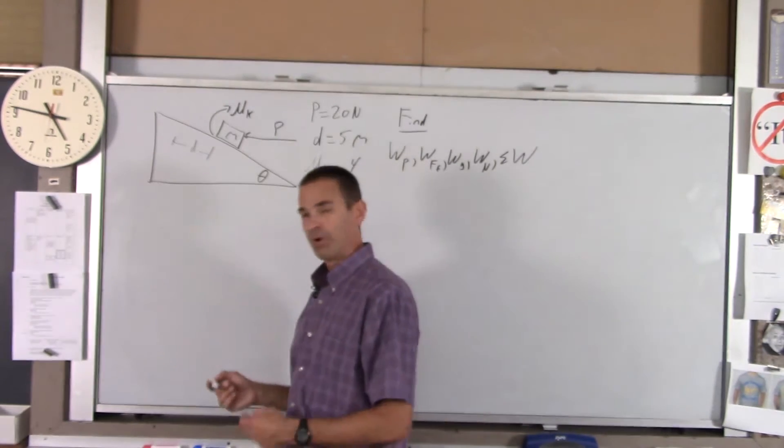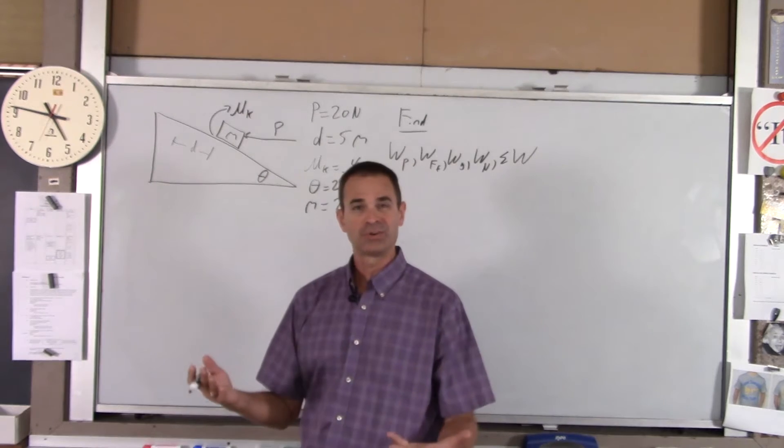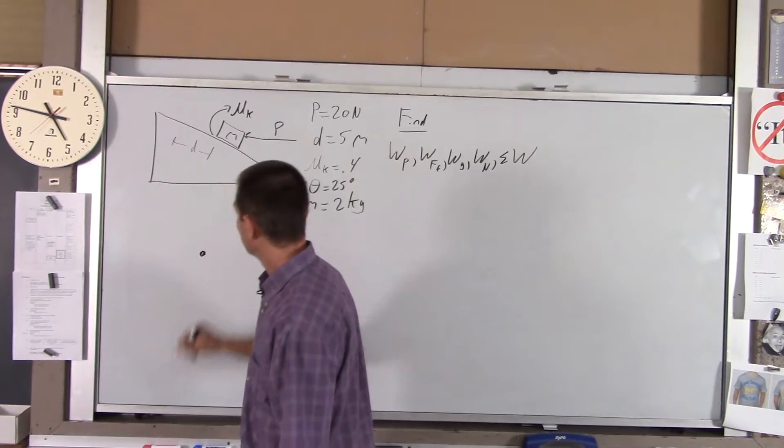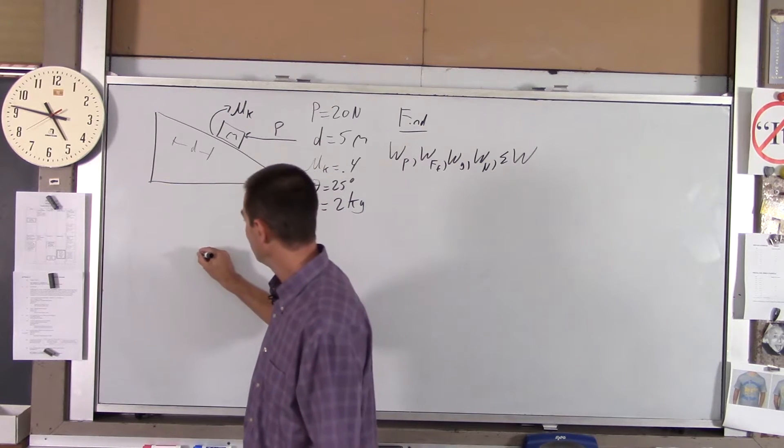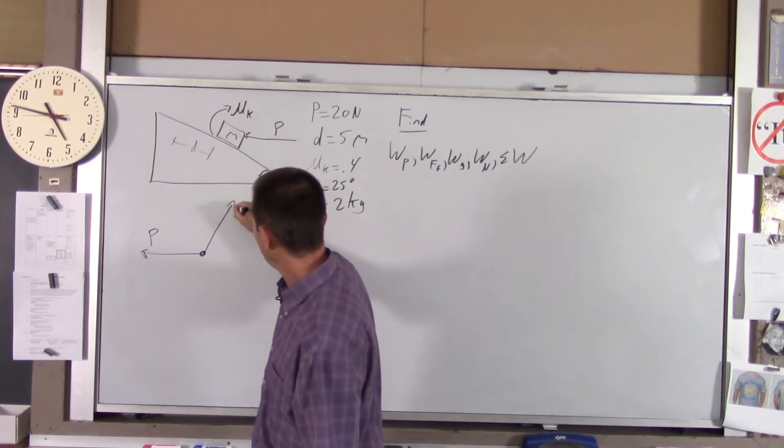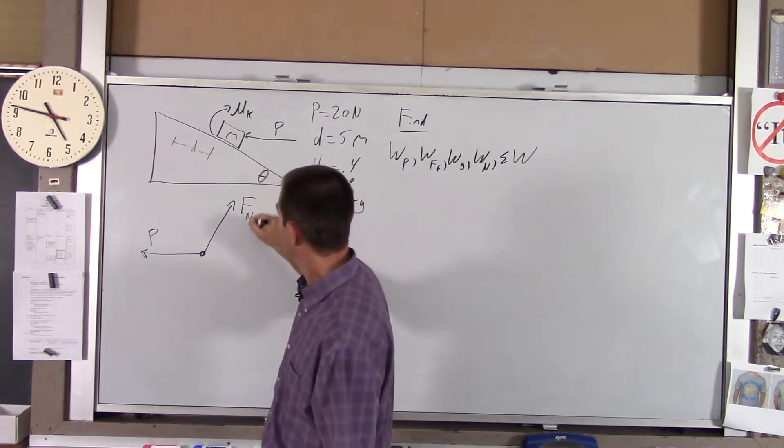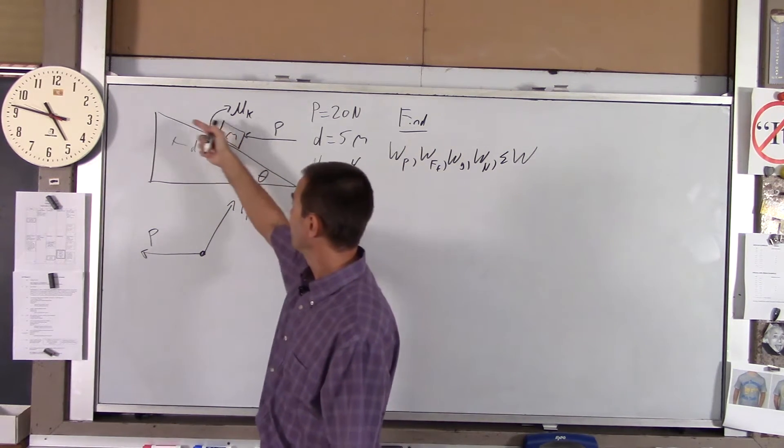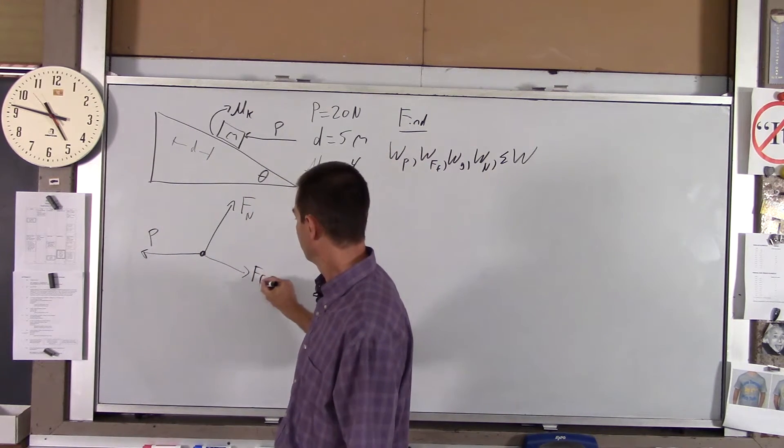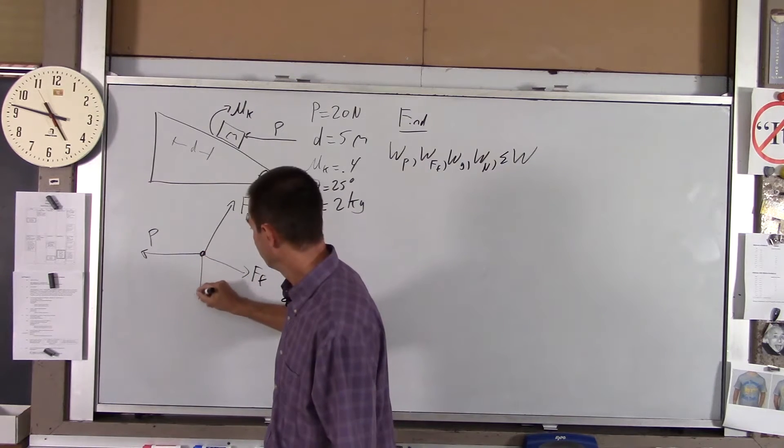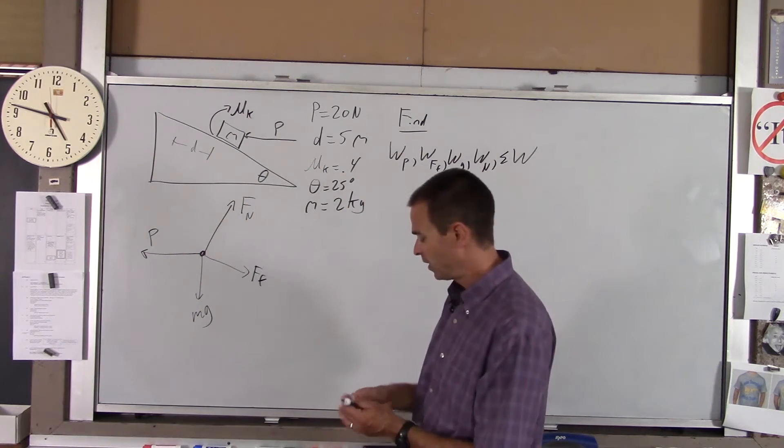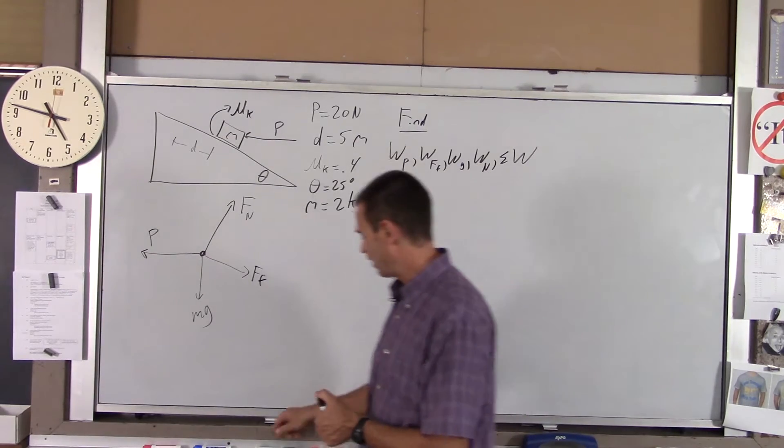Like with most problems that have multiple forces, you start with an FBD. There's our object. The forces acting on it: we've got P, we have normal force which is about that way, and if it's sliding up the incline there's friction - friction will act down the incline - and then we've got mg, force of gravity.